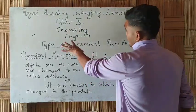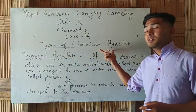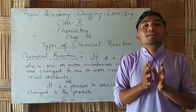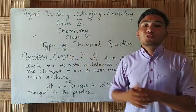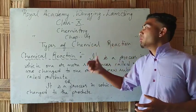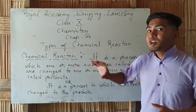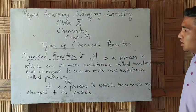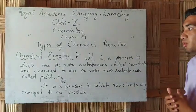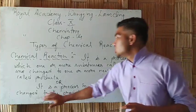In chapter 4, class 10, chapter 4, there was a reaction. This is a chemical reaction. A chemical reaction is a process in which one or more substances — reactants — are converted to one or more new substances — products. It is a process in which reactants are converted to products.